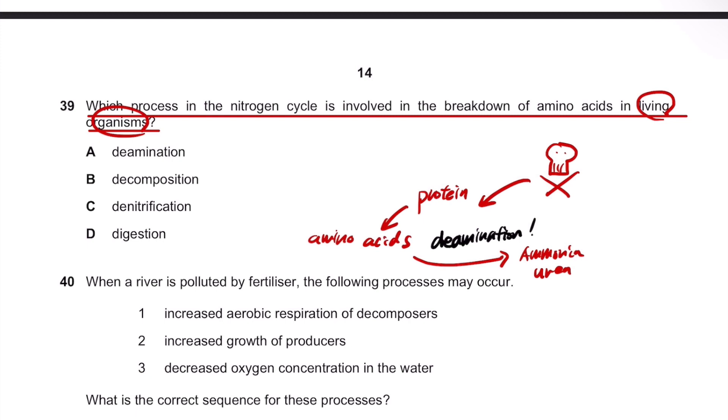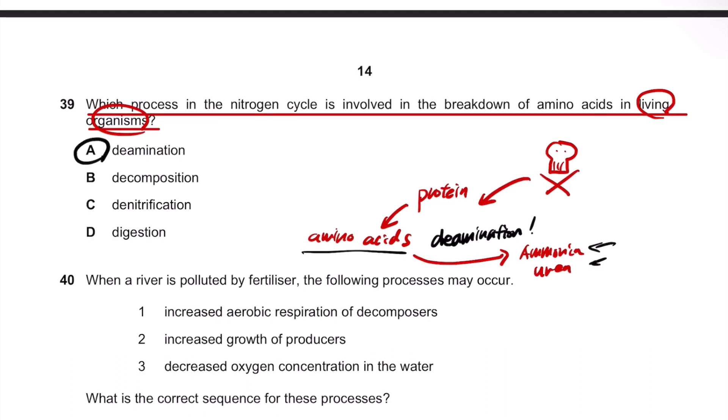Converting amino acids to ammonia or urea is called deamination. Hence, the answer is A.